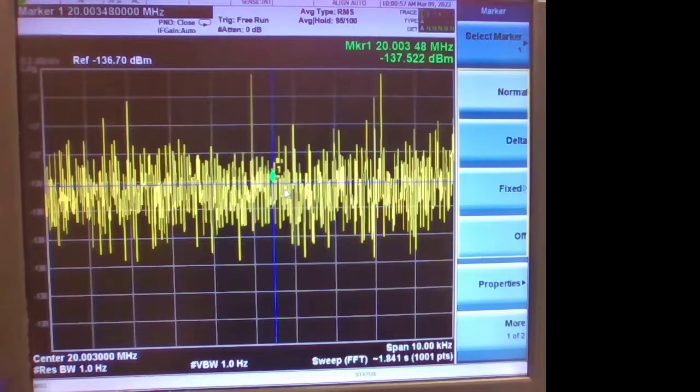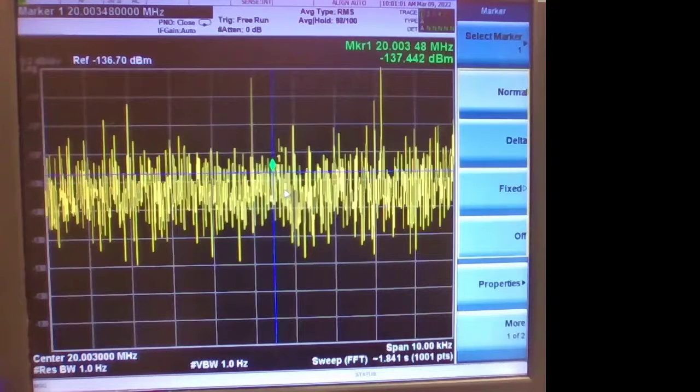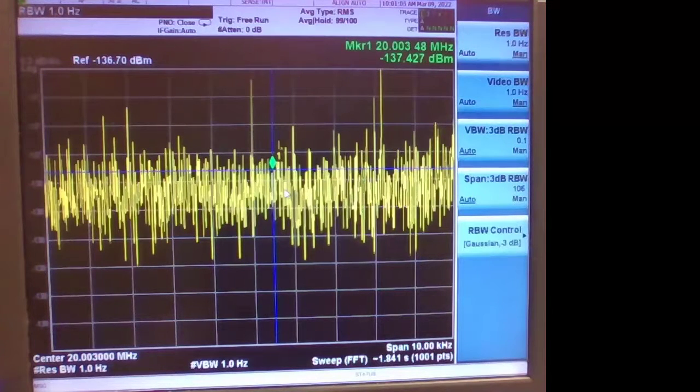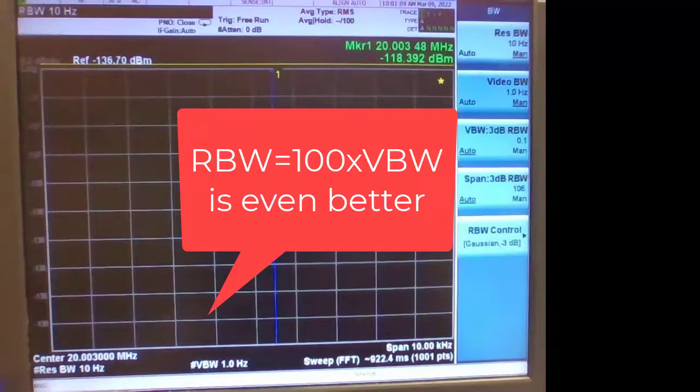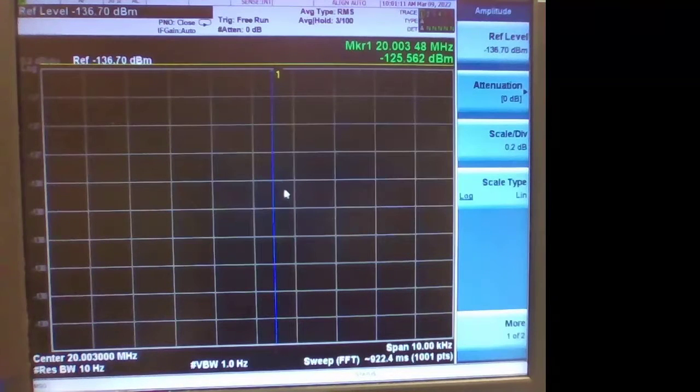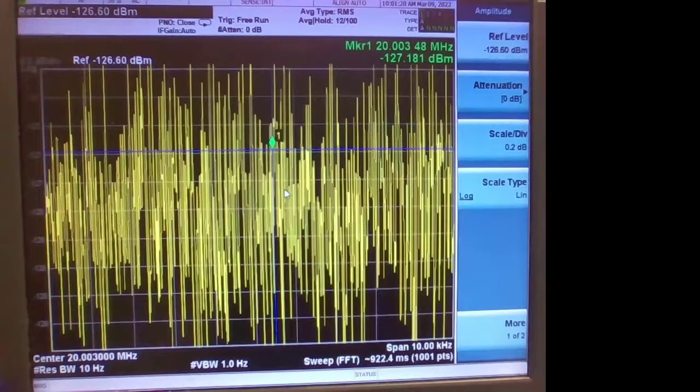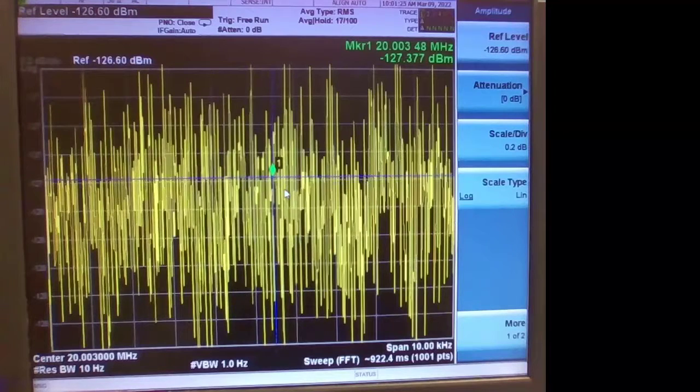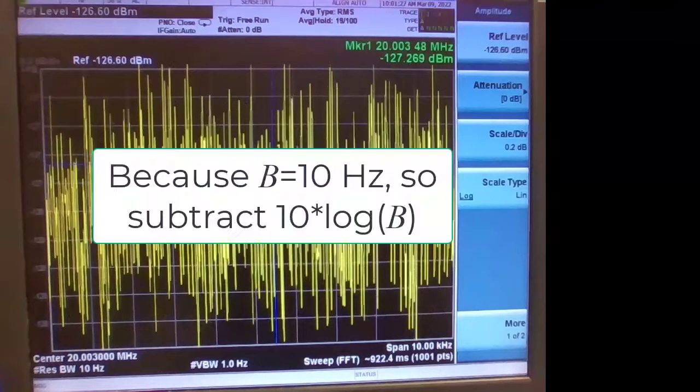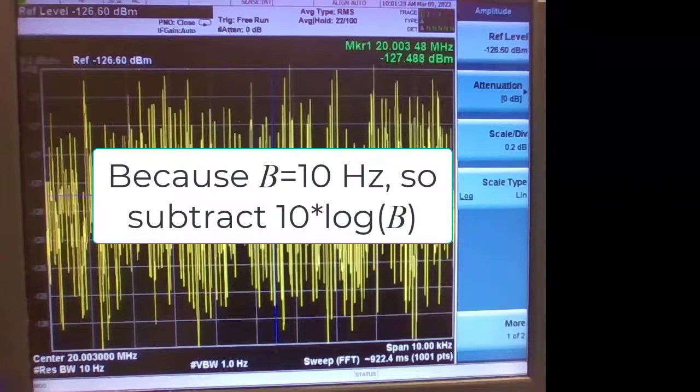There are a couple of other ways of getting this. You can average it to be even flatter by changing the resolution bandwidth to be at least ten times higher than the video bandwidth. Let's make it 10 Hertz and the level will go up by 10 decibels. And after it's averaged a little bit it will be even less noisy than the trace we just saw but it'll be 10 decibels higher and you need to subtract that 10 decibels from the noise level.